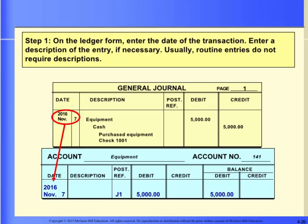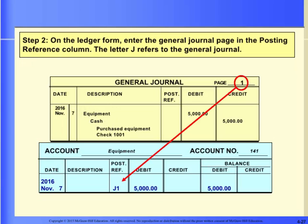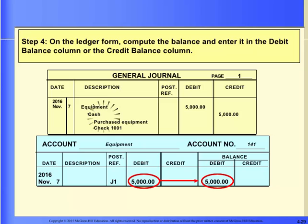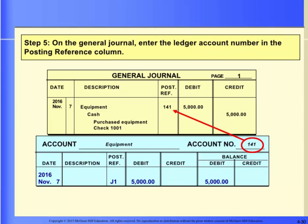Step 1: Transfer the date and description, if necessary. Step 2: Write the journal page that the journal entry is recorded on in the posting reference column in the general ledger — J refers to journal. Step 3: Transfer the dollar amount to either the debit or the credit column of the general ledger. Step 4: Enter the balance of the account after posting, making sure to include the previous account balance in your current account balance. Step 5: Write the account number in the post-ref column of the general journal to indicate that the entry has been posted.